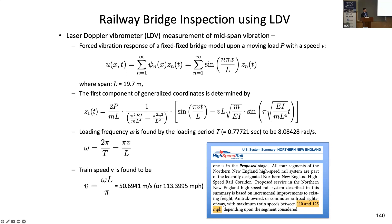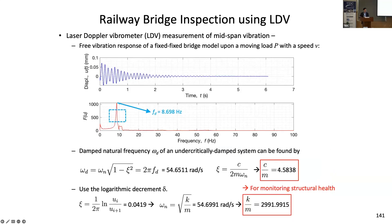By going through this calculation, we can even calculate the speed of the train without knowing it in advance. We found the speed was about 113 miles per hour, which is within the speed limit posted by Amtrak — confirming our calculation is correct. We then use the forced vibration to calculate damping and stiffness, which are parameters we can use for structural health monitoring by constantly monitoring changes in stiffness and damping to quantify structural condition.